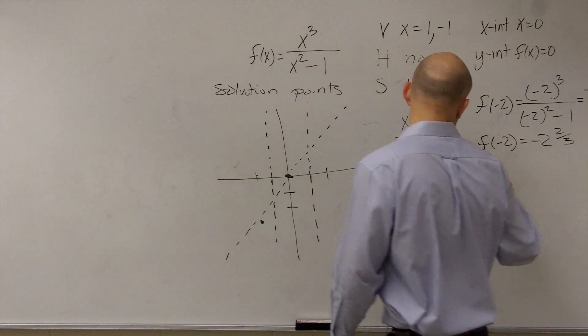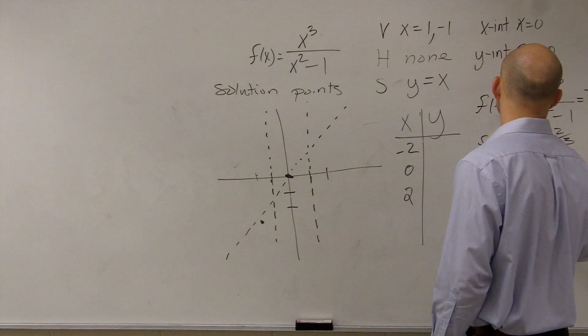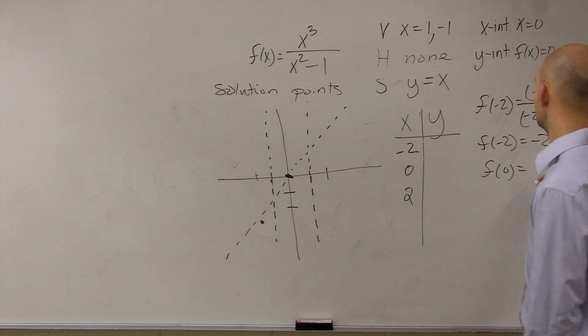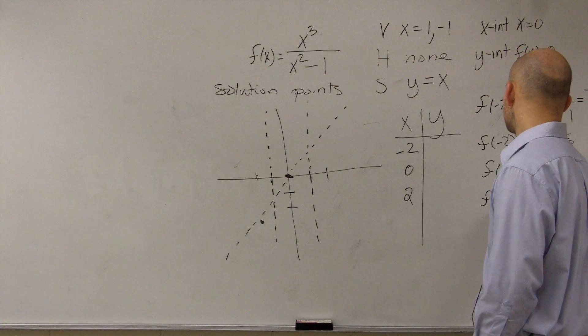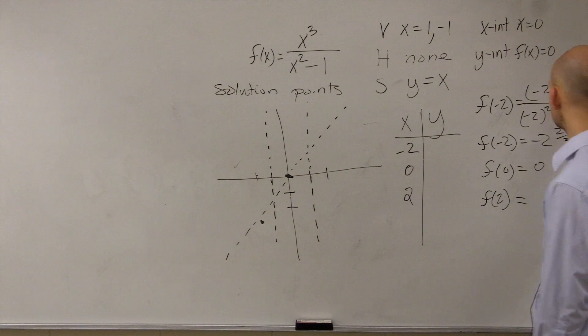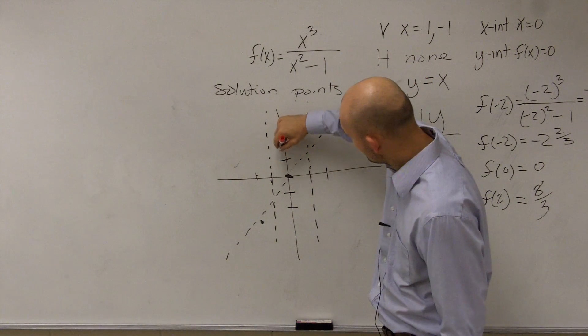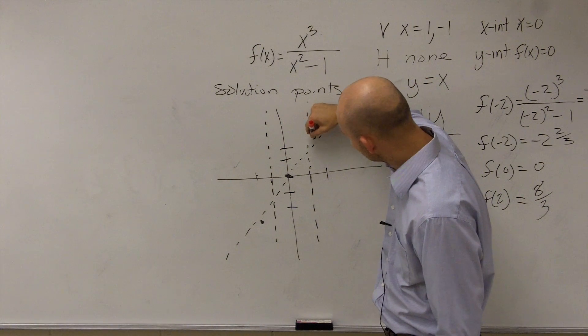Then let's do f of zero, which we already know is zero. Ends up equaling zero. And let's do f of two, which is going to be the exact same thing except it's going to be positive.